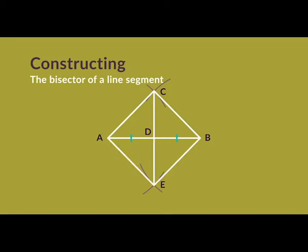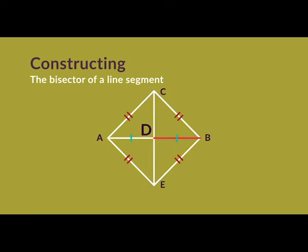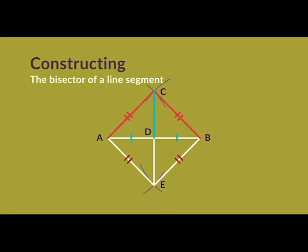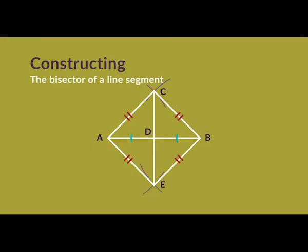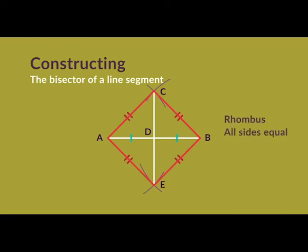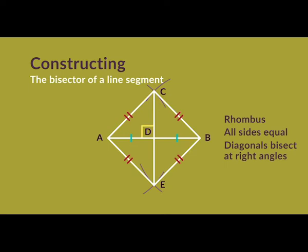Notice that we have constructed four congruent triangles in this construction. The lengths AC, BC, AE, and BE are all equal, because they equal the radius of the compasses at the same setting. In triangles ADC and BDC, AD equals BD because we bisected AB by construction, AC equals BC by construction, and CD is a common side. From this, angles ADC and BDC are right angles, as they are equal and adjacent on a straight line. Notice also that CBEA is a rhombus with all sides equal, and the diagonals of a rhombus bisect each other at right angles.